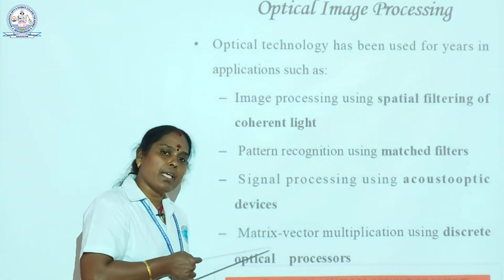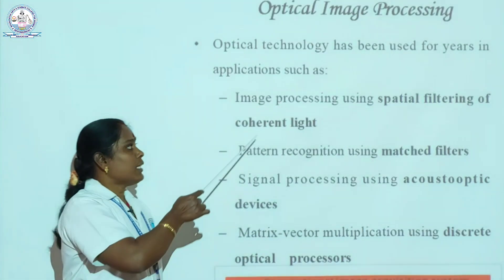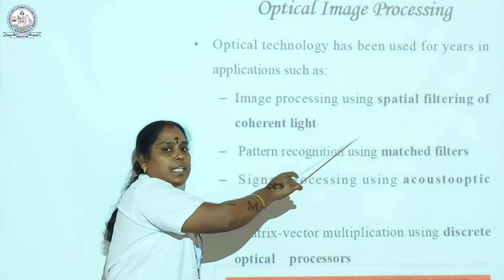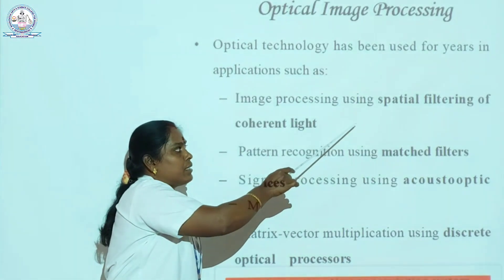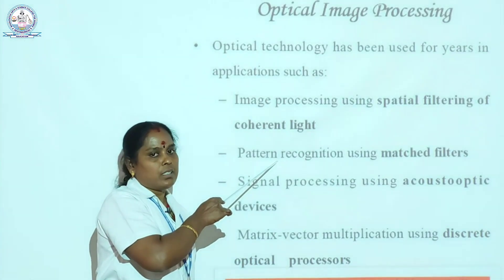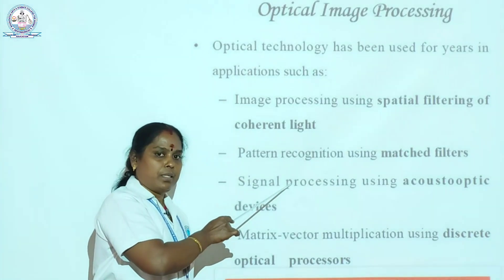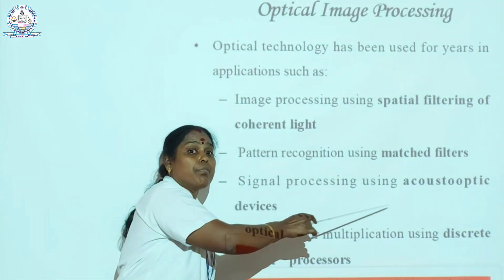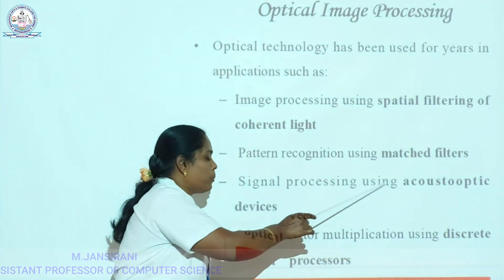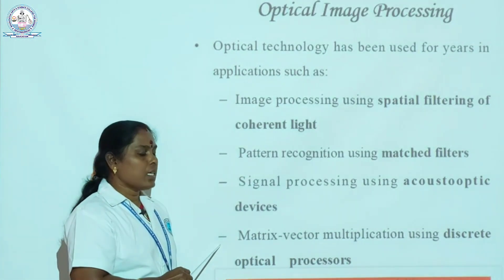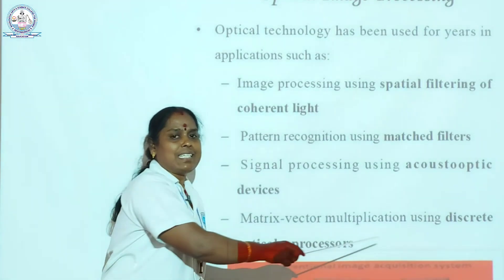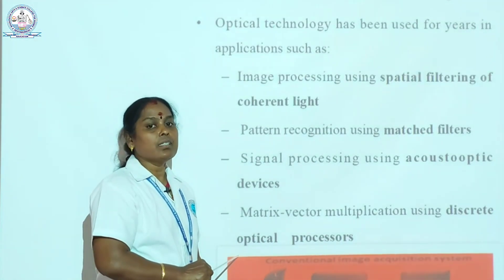The third type is optical image processing, a familiar and widely used method. It uses spatial filtering of coherent light for project-making in image processing. The second method is pattern recognition, used in matching filters. The third is signal processing, used in microscopic devices. The last one is matrix-vector multiplication, in which images are seen in discrete format.